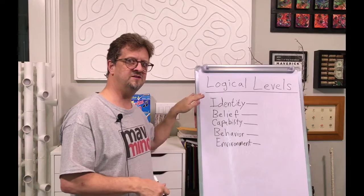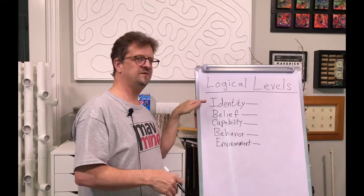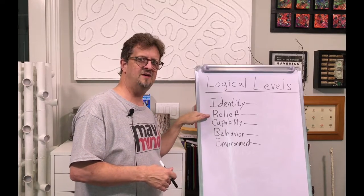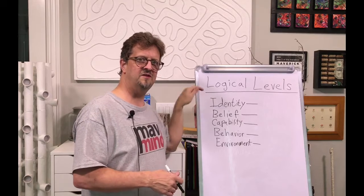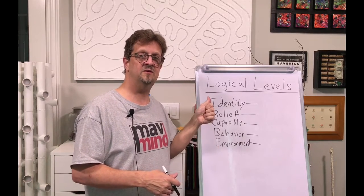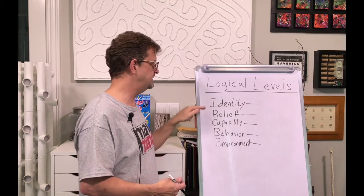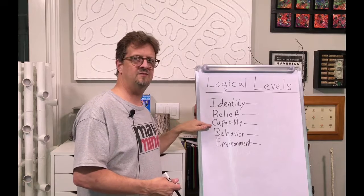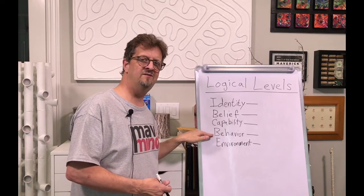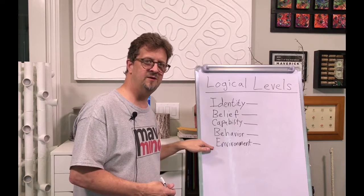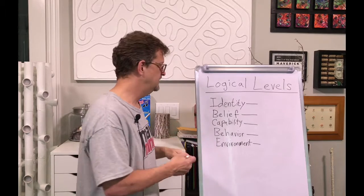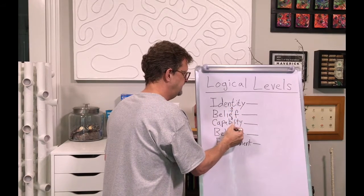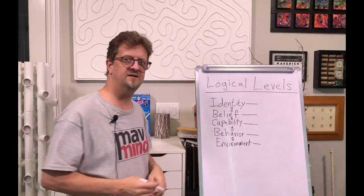So the way this works, it's a hierarchy. If you're listening on the podcast, the first top level is identity. Then it's followed by the second level, which is belief. Each level here is connected to the one below it, and vice versa, the one below is connected to the one above. They're interconnected in the sequence. Identity is first. Belief is second level. Third level is capability. Fourth level is behavior. And fifth level is environment. They're all connected to each other.